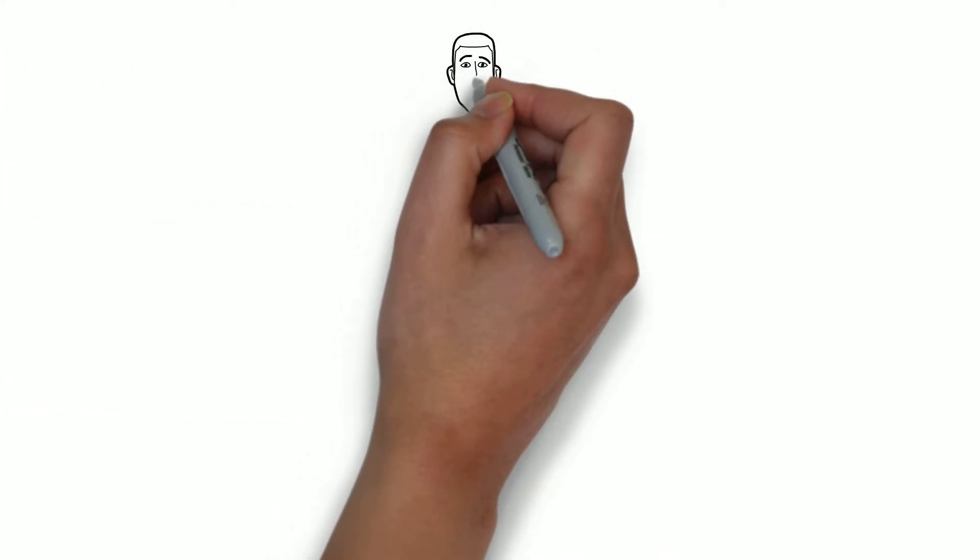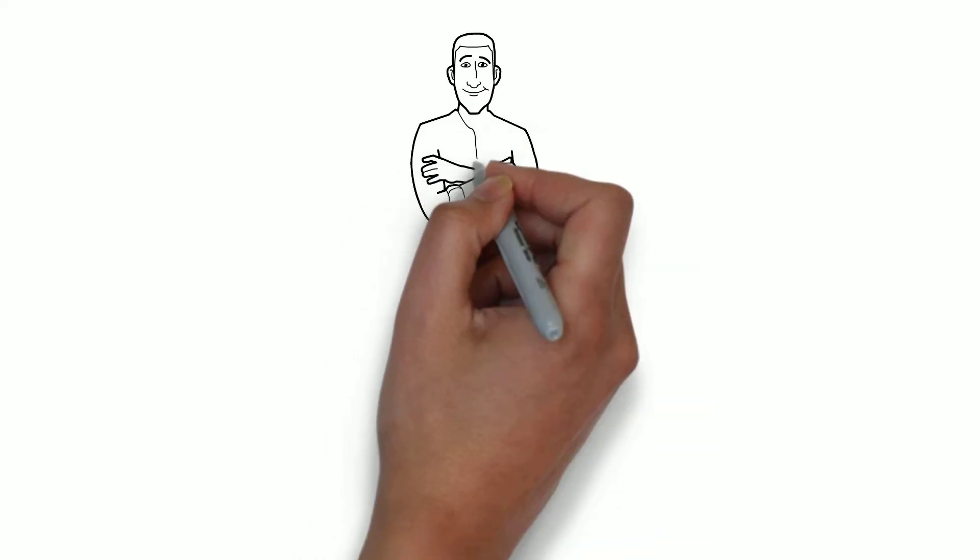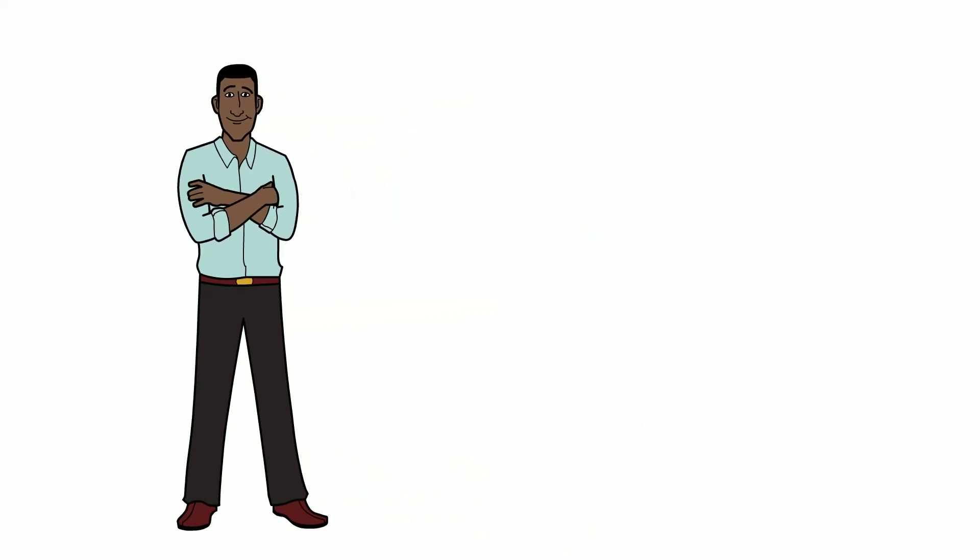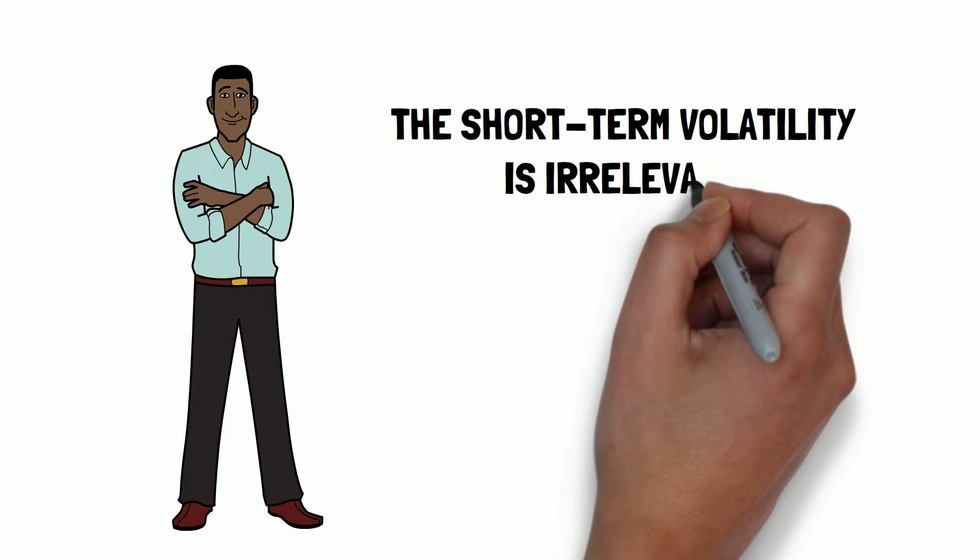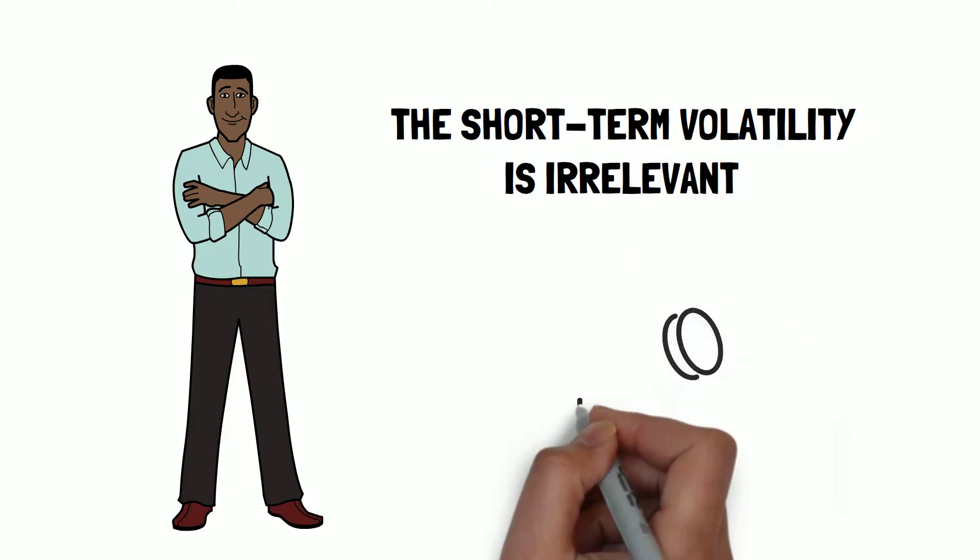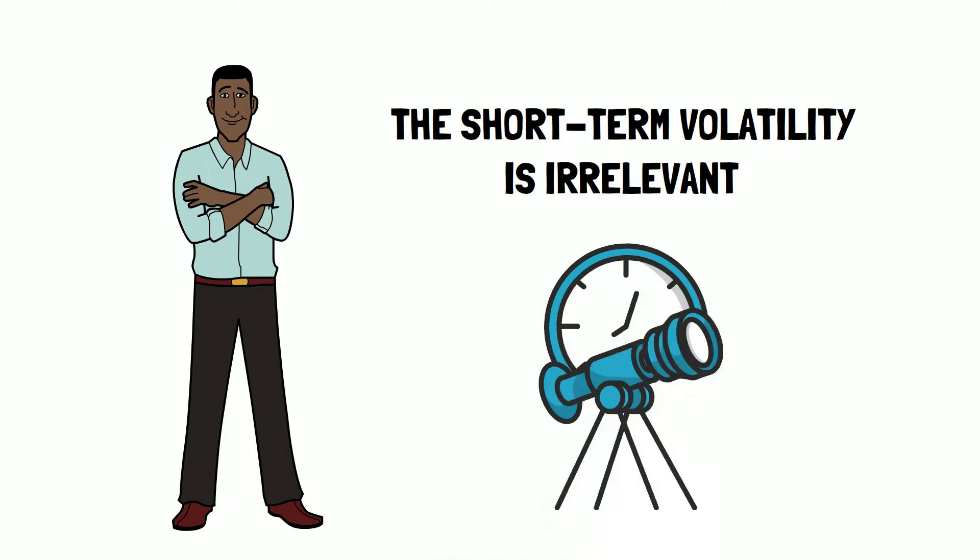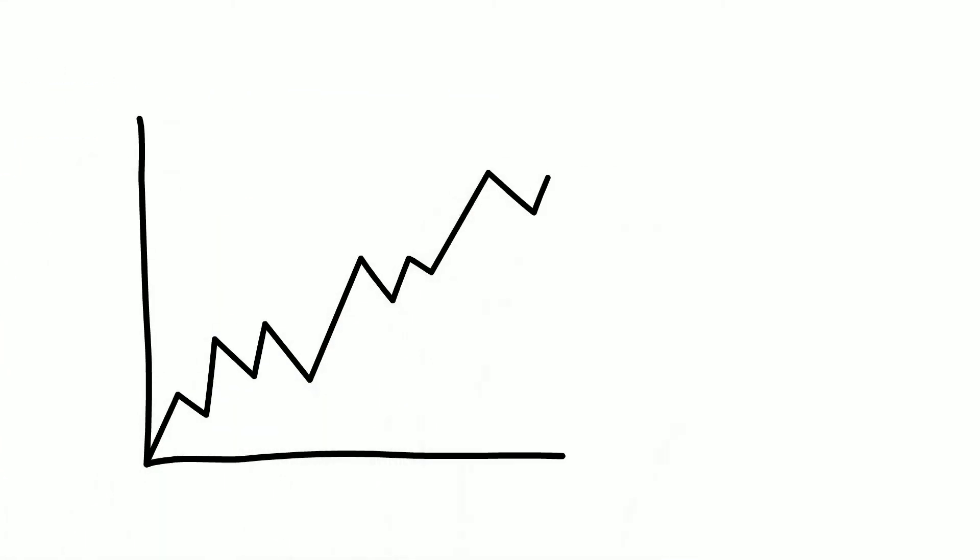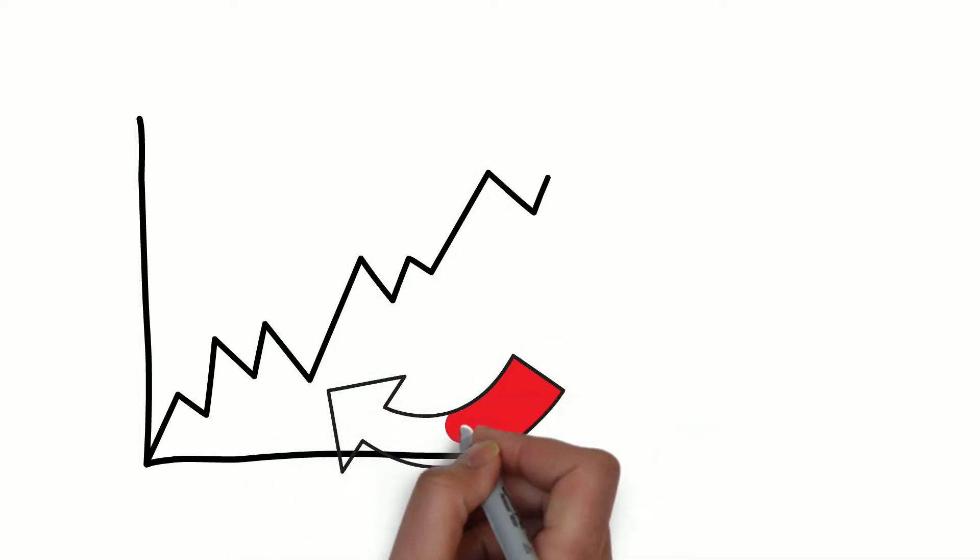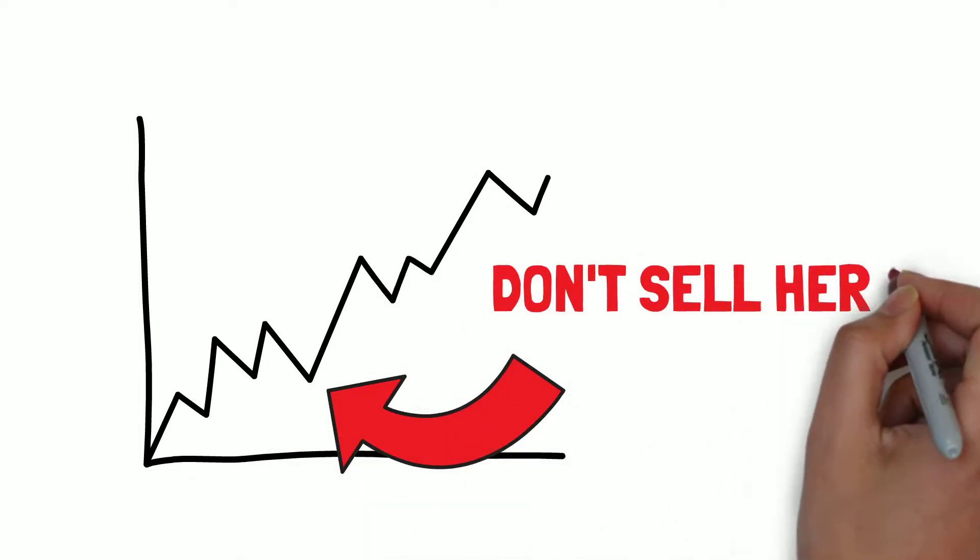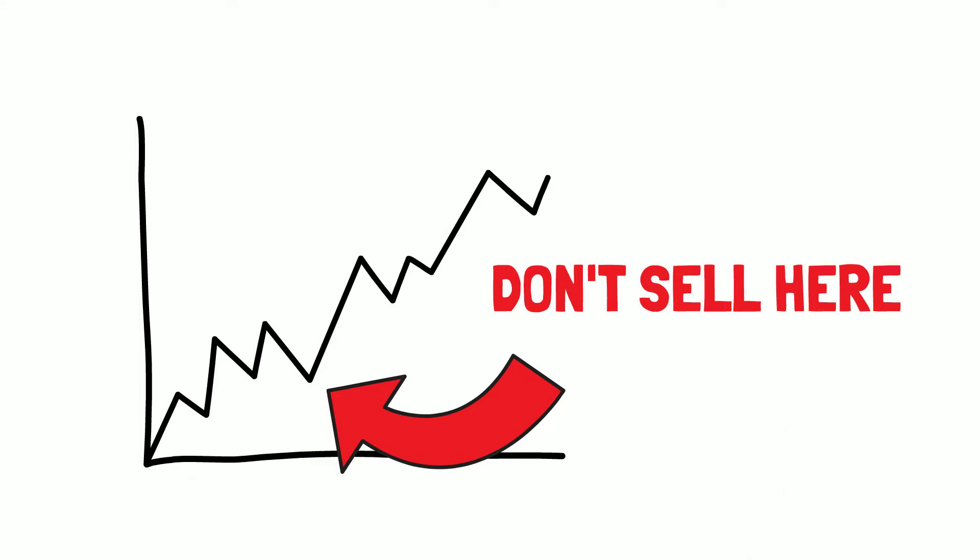If the numbers of the company are good, and you know that the company has the potential to be a great investment over time, the short term volatility is irrelevant. Warren Buffett said that the stock market is a device that transfers money from the impatient to the patient. Many people sell their stocks when they fall in the short term, but they should do the opposite. As Buffett said, be fearful when others are greedy, and be greedy when others are fearful.